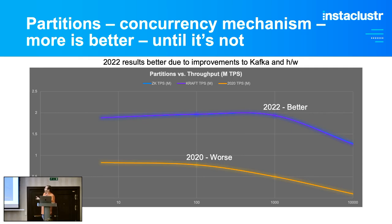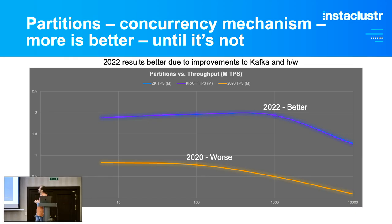Partitions are the concurrency mechanism — in general more is better, except when they're not. Some benchmarking we did in 2020 shows throughput starting to drop at around the 100-partition mark. The more recent 2022 result, done when KRaft first became available for Kafka, shows throughput was better and didn't start dropping until after 1,000 partitions. So there's sort of a magic number of partitions for a cluster — too few or too many and your throughput will suffer.